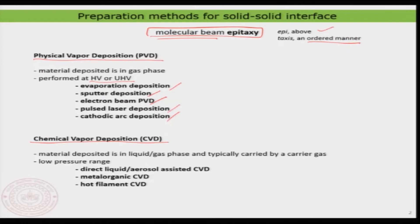The simple essence of chemical vapor deposition is that the material to be deposited is carried by a gas, either in mixed or pure form, and then that gas carrying the material is used to deposit onto the surface. Within CVD you can have aerosol-assisted CVD, metal-organic CVD, hot filament CVD, and so on. We will look at a few of these in detail, see how to prepare CVD-based epitaxy, and look at a few examples. Now let us look in detail at a few physical vapor deposition methods.